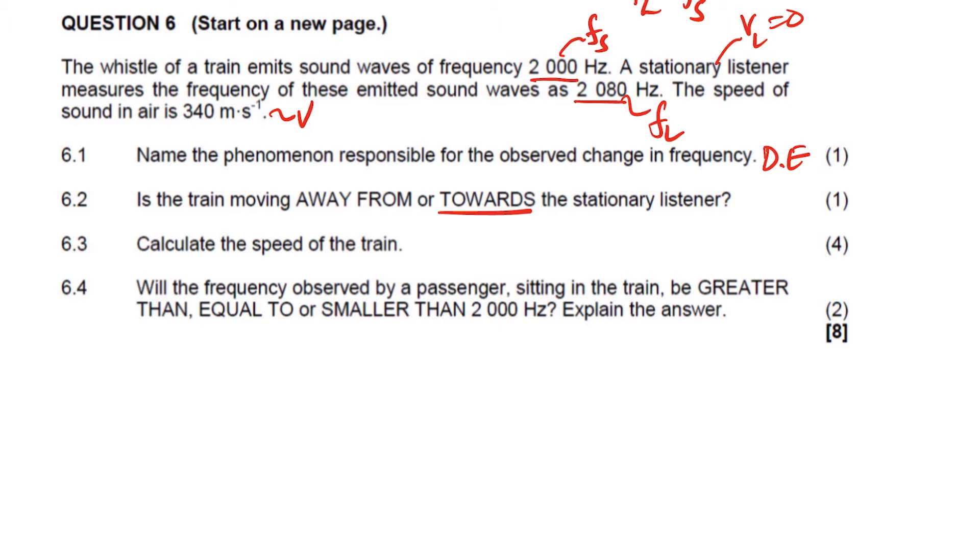Now 6.3 it says calculate the speed of the train. So now in 6.3, since it's moving towards, the frequency of the listener is equal to V plus velocity of the listener divided by V minus the velocity of the source times the frequency of the source.